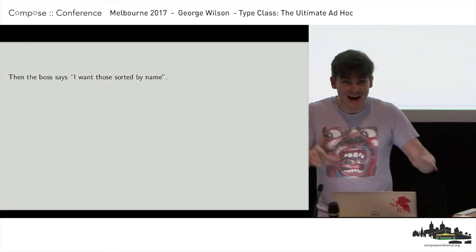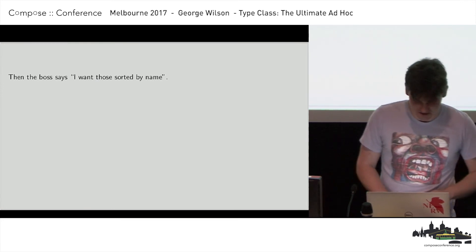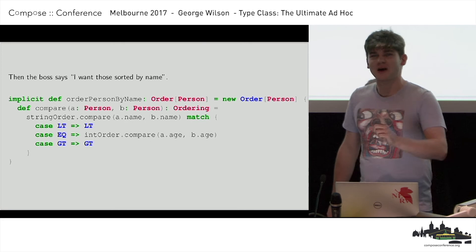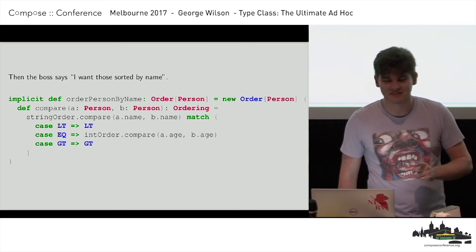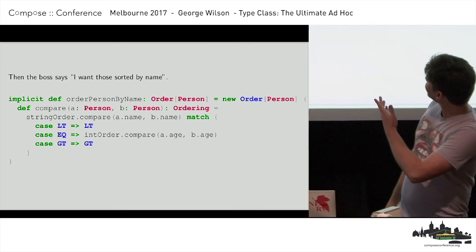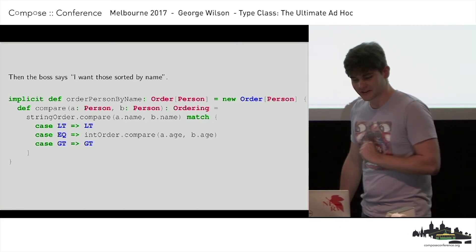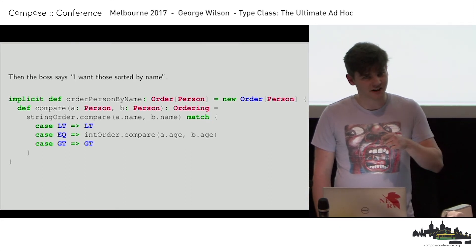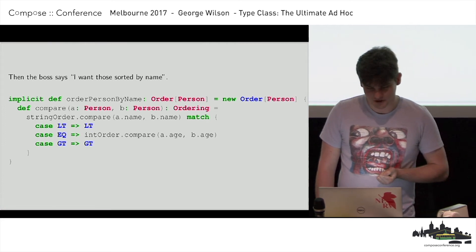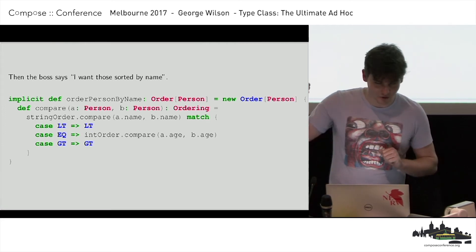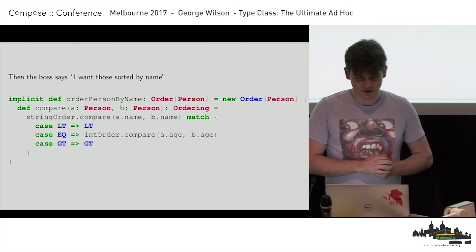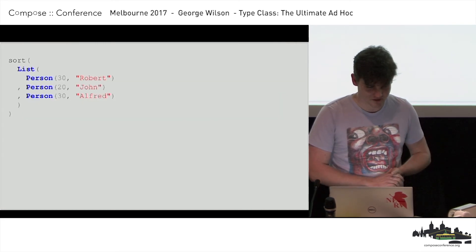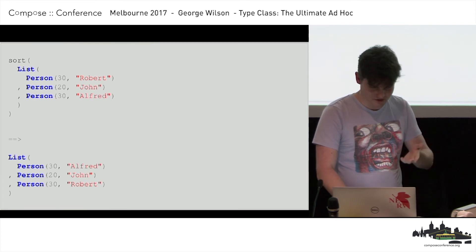So if we have a list of persons, we can sort them, and they'll come out sorted first by their age, and only if their ages are the same, they'll then be sorted alphabetically by name. But then your boss slams through the door and says he needs those persons sorted by name. And you have the power of implicits — it's easy. We just make another ordering for persons, and this one looks at their names first. If the names are the same, then we look at the age. So now you can satisfy the boss and order things the right way.